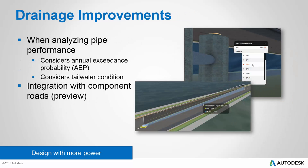We're also giving you additional tools to design with more power when you're using the drainage tools of InfraWorks 360. Now when you're analyzing pipe performance, you can factor in the Annual Exceedance Probability, or AEP, which means you can analyze your pipe based on a 10-year storm, 50-year storm, 100-year storm, or anything on the list. It also allows you to consider the tailwater condition, with several choices available for that feature. In addition, drainage design integrates with the new Component Roads preview and understands some of the geometry going on with component roads in your InfraWorks 360 model.